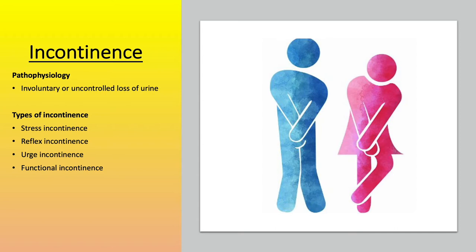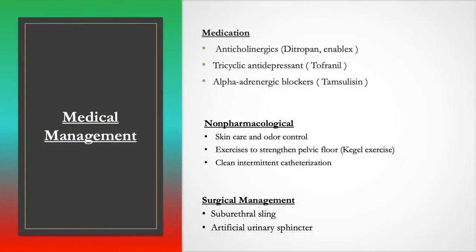Now we're going to discuss medications used for incontinence. Anticholinergics such as Ditropan and Enablex help by calming down an overactive bladder. Keep in mind: anticholinergics relax the bladder.